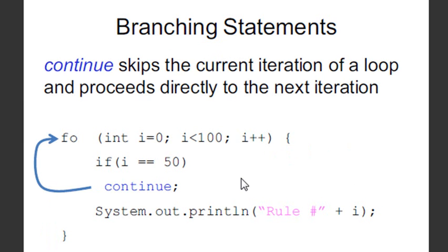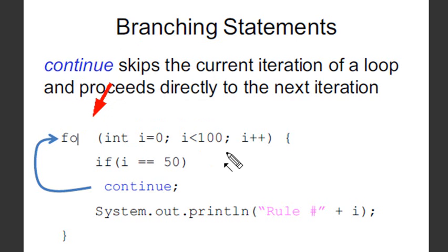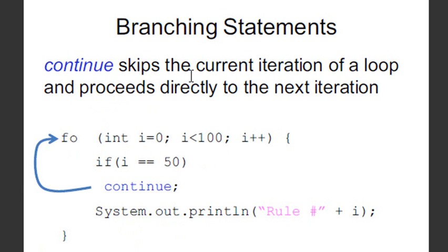There's also continue, which is not break — you may want to keep iterating but not execute some code for a certain iteration. There should be a FOR loop here — that's a mistake in the lecture notes. What we're doing is iterating through the entire thing and printing out the rule plus i, but when i is equal to 50, we continue — we don't print, we just go back to the for loop and start going through it again. This can be a useful statement. When you get to mathematical programming, you definitely need something like this. You can see they're using i++ and as long as you're less than 100, you keep moving through, but if i equals 50, you just skip that one.